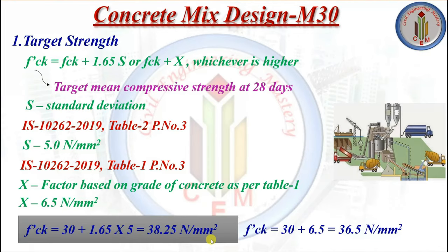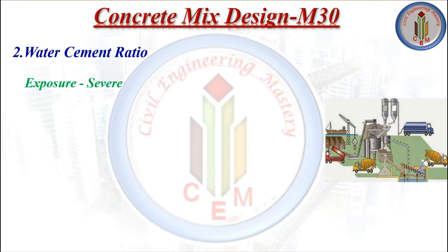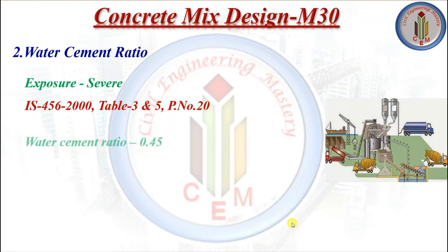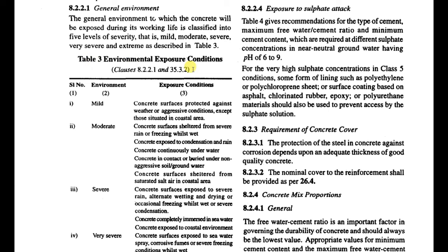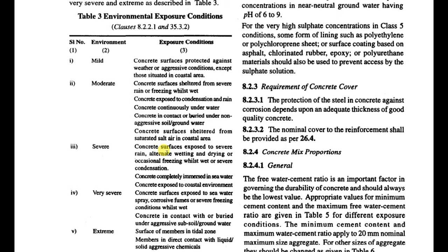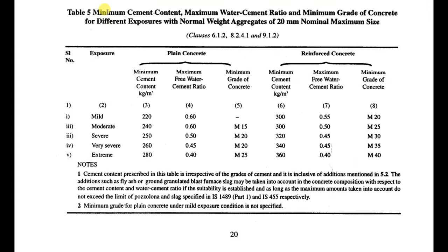For water-cement ratio, exposure condition is severe. From IS 456:2000 Table 3, the environmental exposure condition shows 'severe' applies to concrete surfaces exposed to severe rain, alternate wetting and drying, or occasional freezing. From Table 5 — minimum cement content, maximum water-cement ratio, and minimum grade for different exposure conditions with 20 mm nominal aggregate size — for severe exposure the maximum water-cement ratio is 0.45.